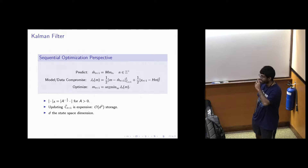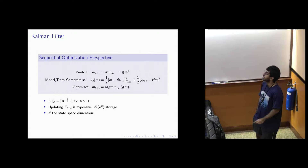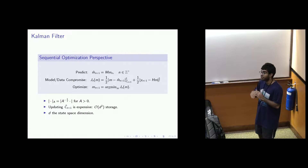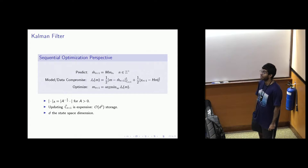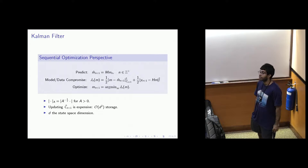There's also an optimization or sequential optimization framework for the Kalman filter: instead of characterizing the solution as a probabilistic distribution of signal v(n) conditioned on y(n), you define a quadratic functional J(n), and the solution corresponds to the minimizer of that functional — the mean. The key limitation of the Kalman filter, which led to many variants, is computational cost. If d is the dimension of the state space, the complexity is O(d²), which is infeasible for large-scale real-world applications.